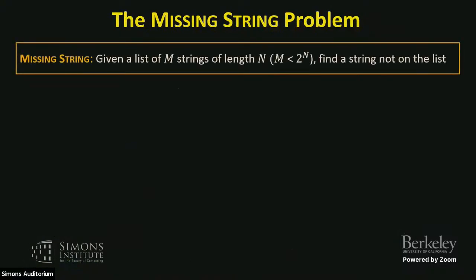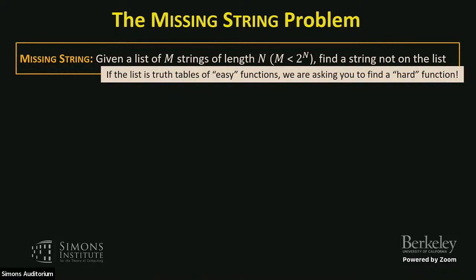This is the missing string problem, and it's really simple. Given a list of M strings of length N, where M is less than 2^N, find a string not in the list. It's a total function problem — as long as we don't include all strings, there exists some string not on the list. If the list is the truth tables of all easy functions, we're asking you to find a hard function: here are all the easy things, find me something that's not there.